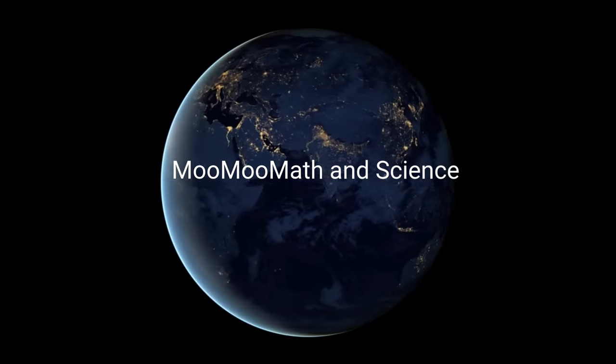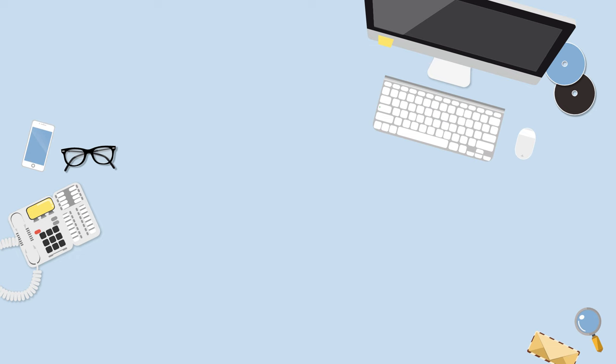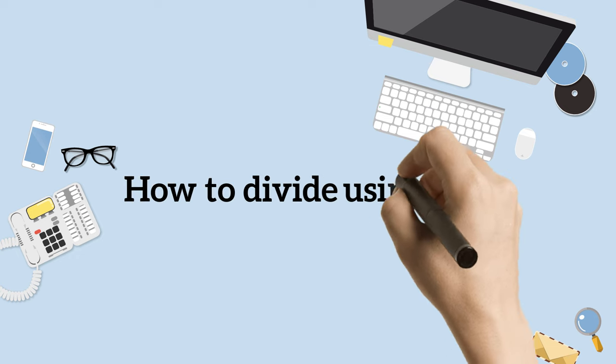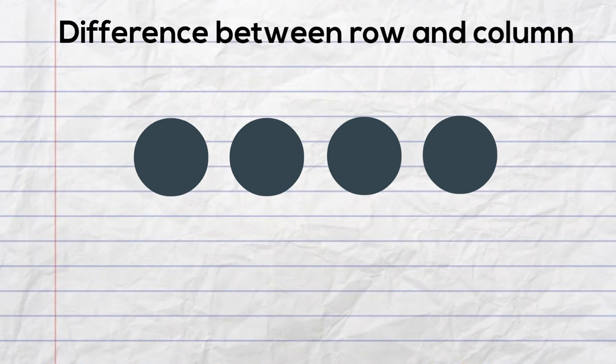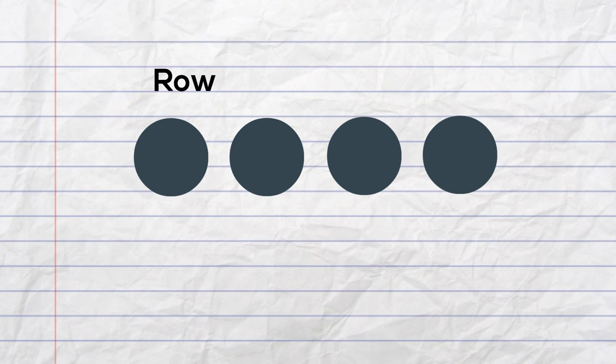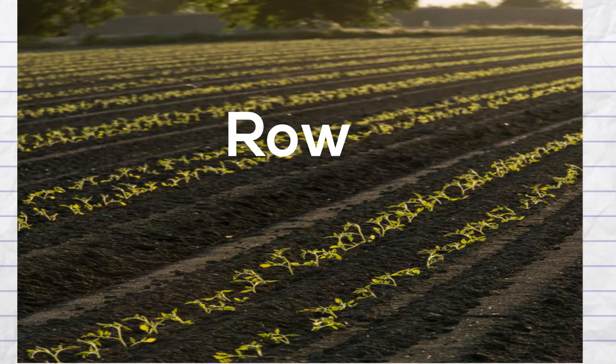Welcome to MooMooMath and Science. In this video, I'd like to show how to divide using an array. Before we get started with division, let's learn the difference between a row and a column. A row is horizontal and moves from left to right, much like on a farm, the crops are in a row from left to right.